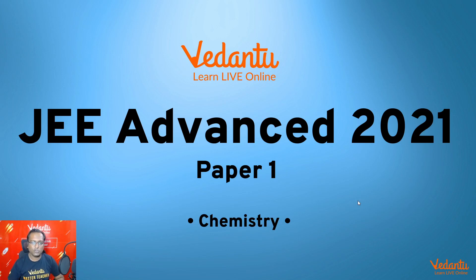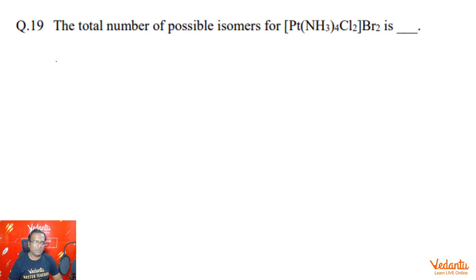Hi guys, my name is Shubhan Garodia, Chemistry Master Teacher at Vedantu. Today we are going to talk about JEE Advanced 2021, Paper 1, Chemistry Subject and Question Number 19.